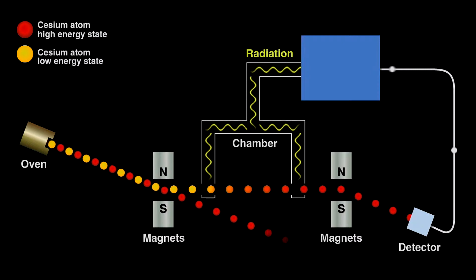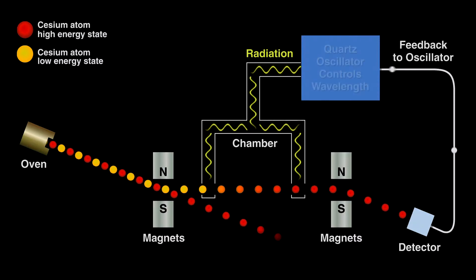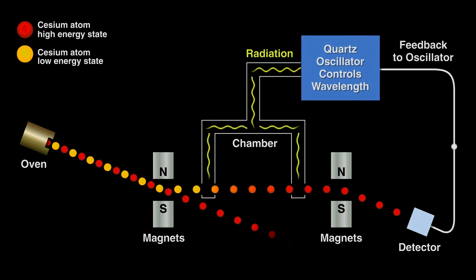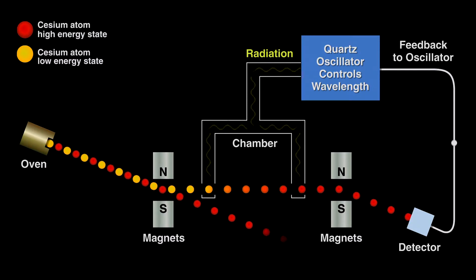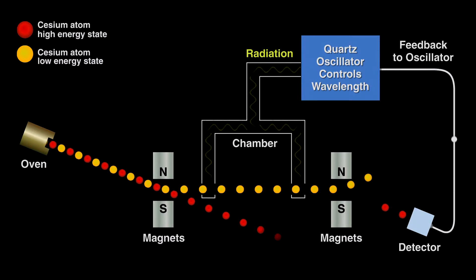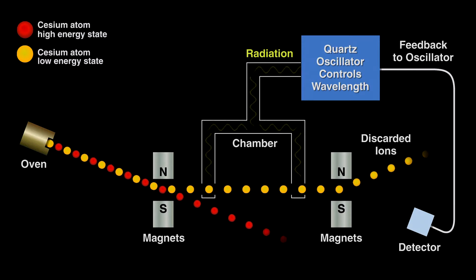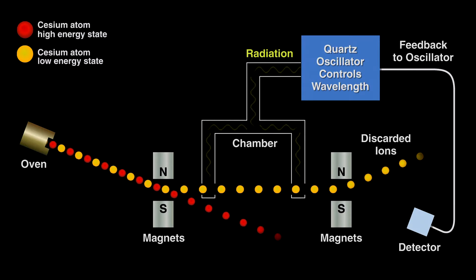The trick here is to tie that current from the detector to the quartz oscillator. When the quartz's oscillations decay, that is, it slows down a little, then the energy bombarding the cesium ions in the chamber changes and fewer high energy ions exit the chamber, so current decreases or stops.